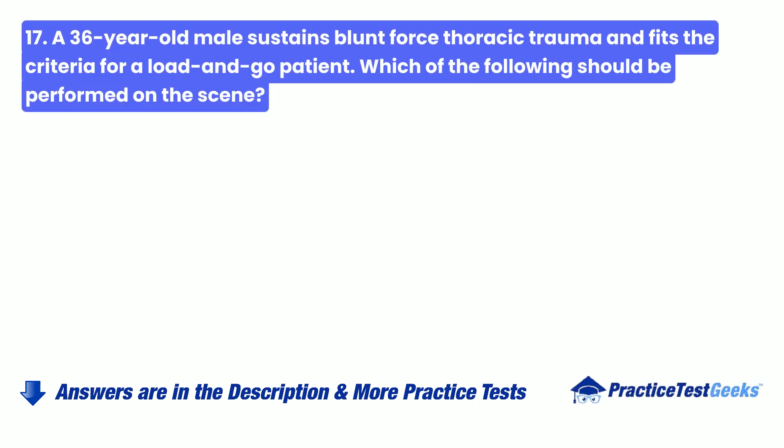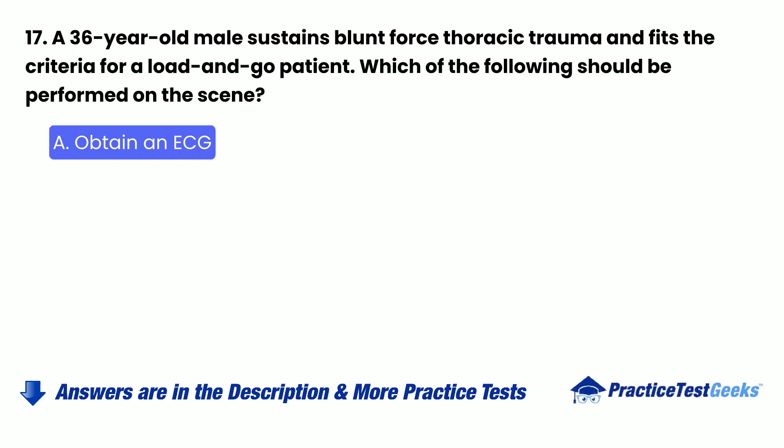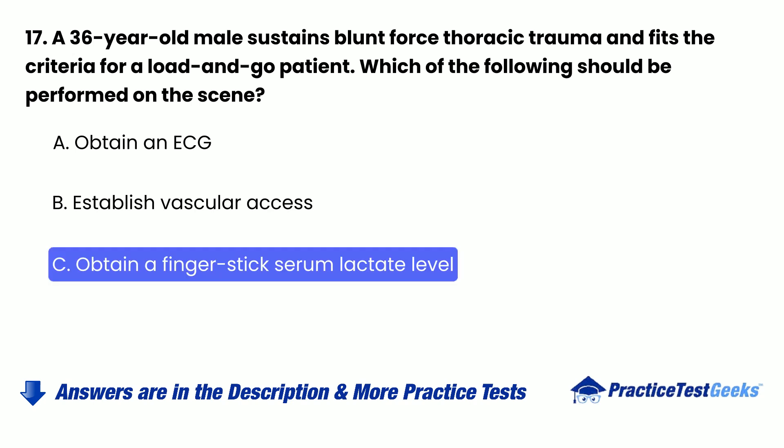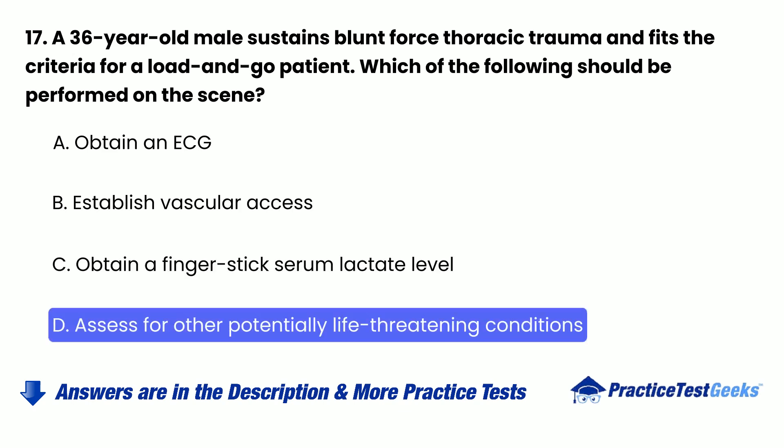Question 17: A 36-year-old male sustains blunt-force thoracic trauma and fits the criteria for a load-and-go patient. Which of the following should be performed on the scene? A. Obtain an ECG. B. Establish vascular access. C. Obtain a finger-stick serum lactate level. D. Assess for other potentially life-threatening conditions.